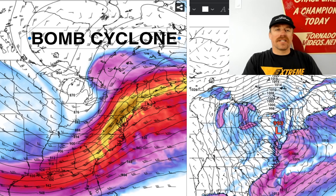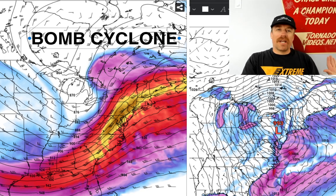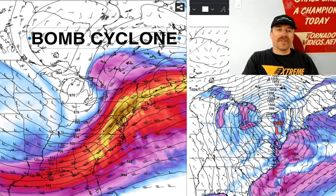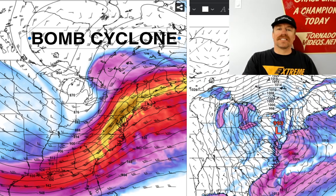Good afternoon, everybody. This is a live extreme weather briefing, and we have a lot to talk about this afternoon, including a bomb cyclone that's going to materialize tonight across portions of the northeast.